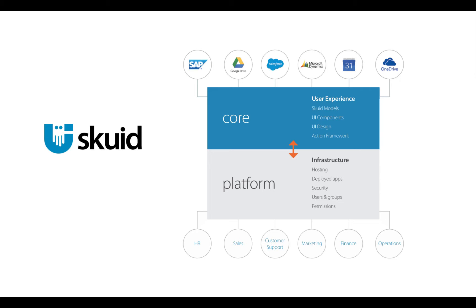First, we have SQUID core — this is where we connect to our systems of record, things like SAP, Google, Salesforce, and Microsoft, where we can connect to data and build our user experience. Then the SQUID platform is how we deploy those applications to our lines of business: HR, sales, customer support, et cetera. You can think of SQUID core as the SQUID application that you use as an administrator to build SQUID pages, and the application your users use to run the applications you build. That is the application that runs inside your browser — it's what allows you to create SQUID models, build UI components, arrange them, design themes, and create processes with the action framework.